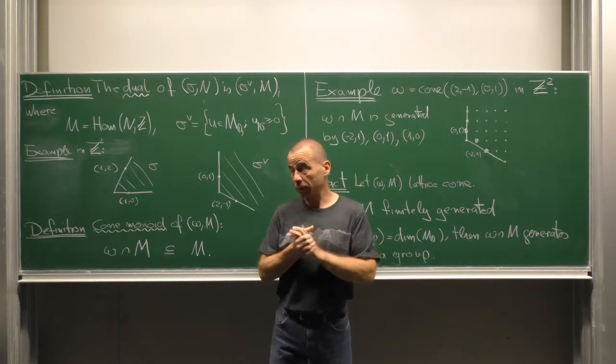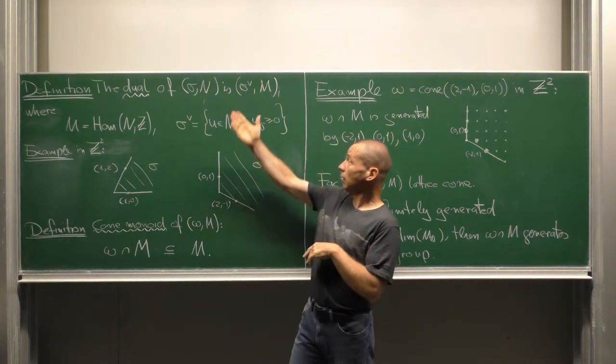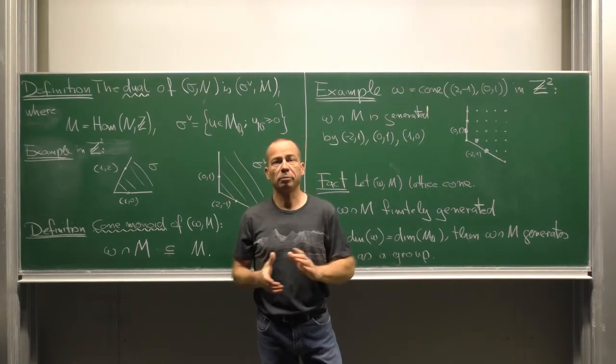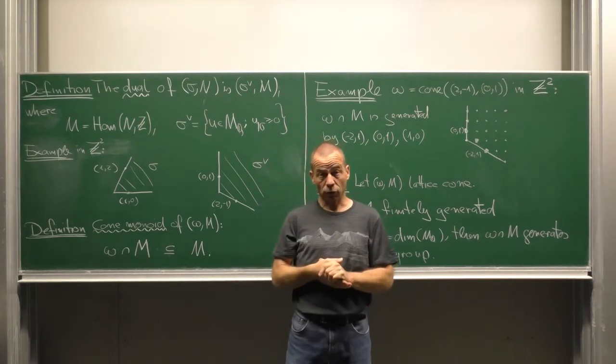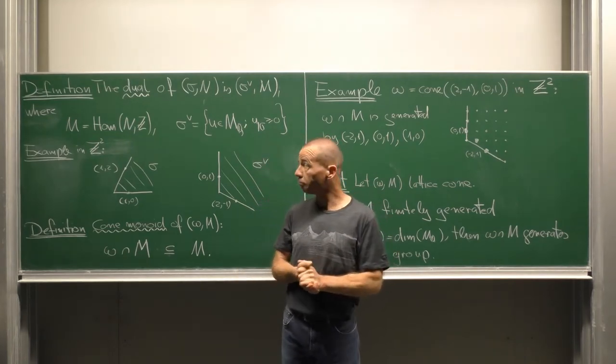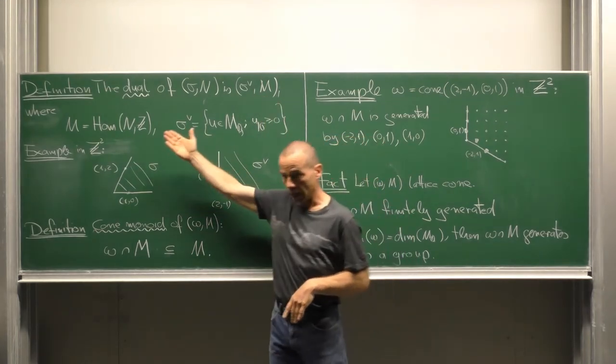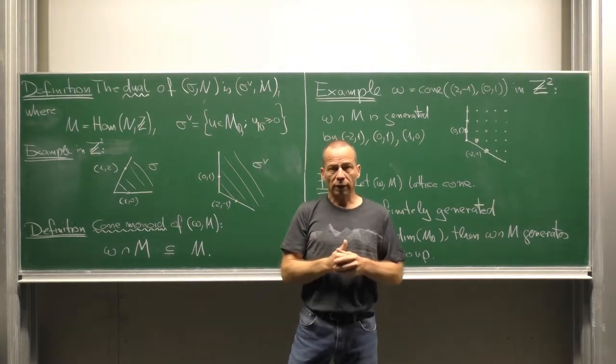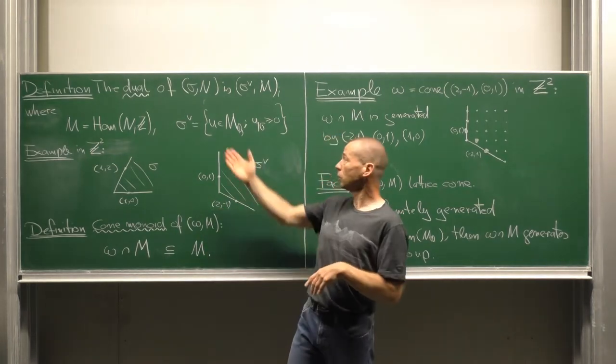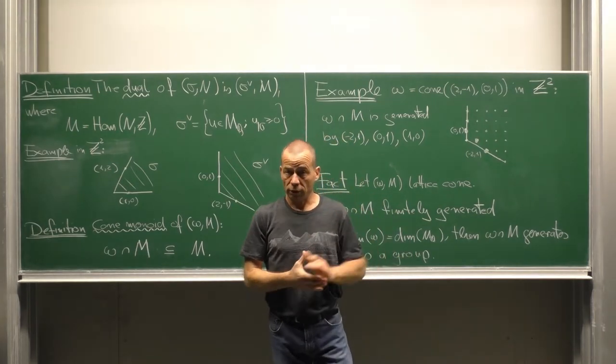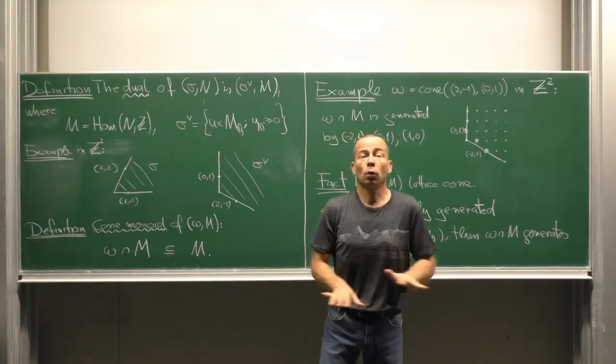First, we have to discuss a bit of lattice cones. Let sigma in N be a lattice cone, that means N is a lattice and sigma is a cone in the associated rational lattice space. The dual of this lattice cone is sigma-dual in M, where M is the dual lattice and the dual cone consists of all linear forms that evaluate non-negatively on the whole sigma.